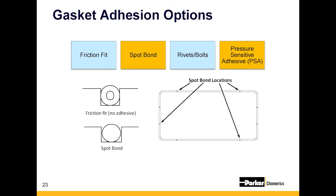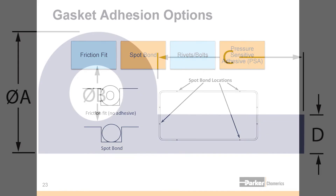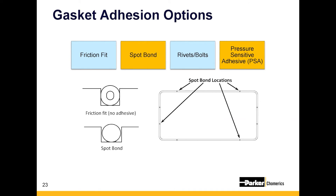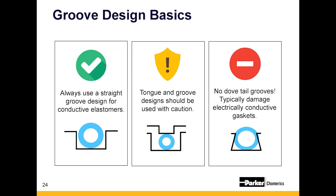Rivets or bolts are another adhesion option. For instance, with a hollow-P design — like a hollow-D but with a leg coming out — you sometimes need to mechanically fasten the gasket when PSA isn't robust enough for a very critical application. Compression stops are also useful when there's a risk of over-torquing the gasket. If you're designing for someone who might over-compress — think of a young technician on a Navy ship deck — compression stops prevent over-compression, and rivets prevent the gasket from falling off.